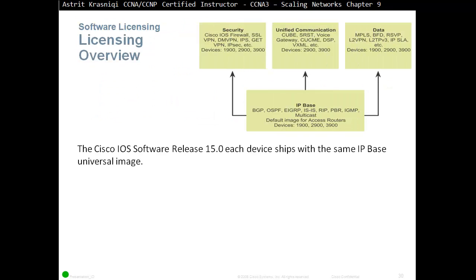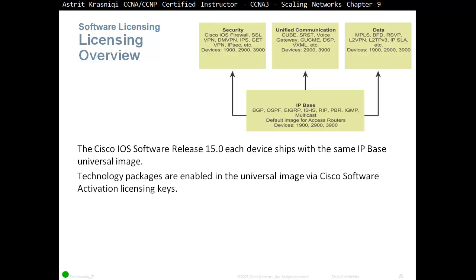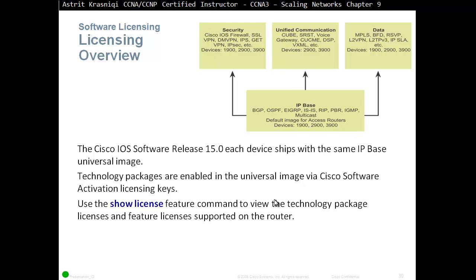Licensing Overview. In Cisco IOS software release 15.0 and above, each device ships with the same IP-based universal image. Technology packages are enabled in the Universal Image via Cisco Software Activation Licensing Keys. All devices come with a default license which is IP-based. If you want any additional technology packages, you need to enable them with Activation Licensing Keys. Use the 'show license feature' command to view the technology packages, licenses, and features supported on the router.